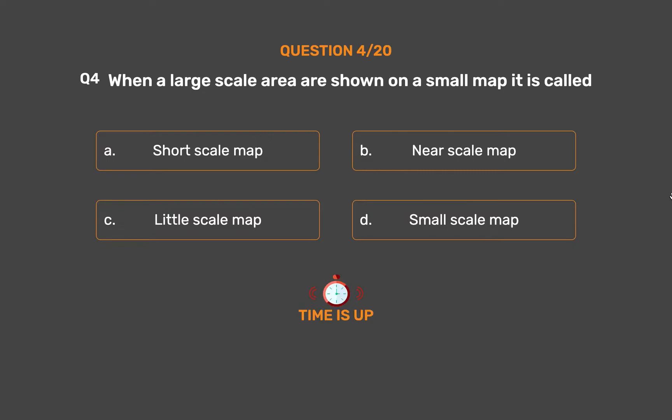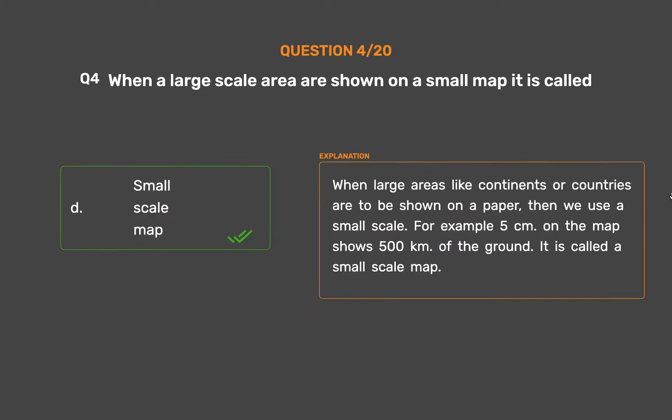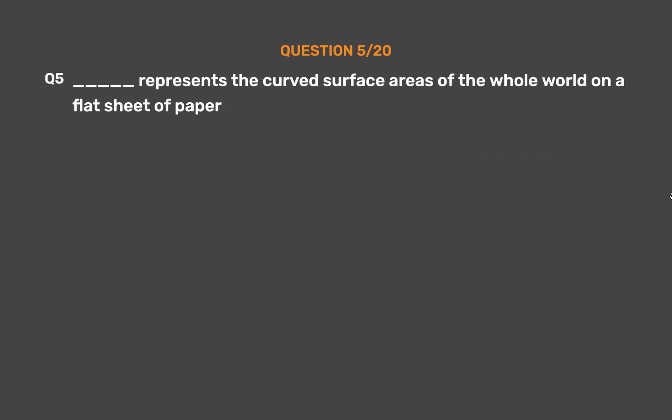The correct answer is Option D: Small scale map. When large areas like continents or countries are to be shown on paper, we use a small scale — for example, 5 centimeters on the map shows 500 kilometers on the ground. It is called a small scale map.